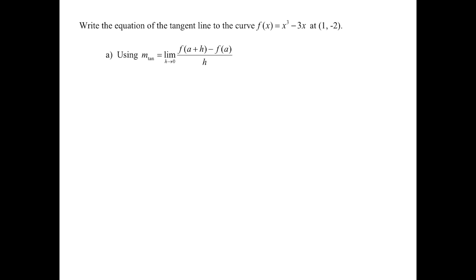Write the equation of the tangent line to the curve f(x) = x³ - 3x at the point (1, -2). Remember that when we're looking at our point, the a value is the x value. So we're looking at where a is equal to 1, and the y value here is essentially f(a). So f(1) is equal to the output of negative 2.